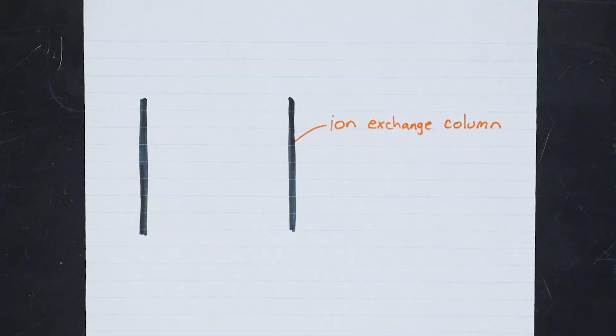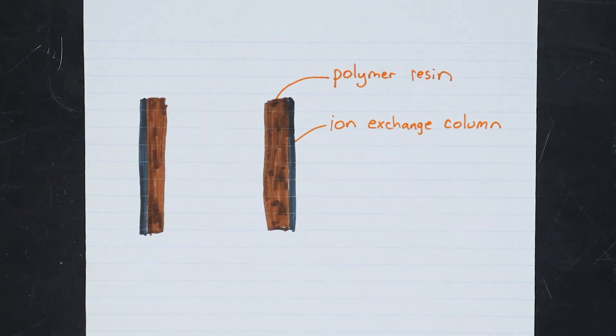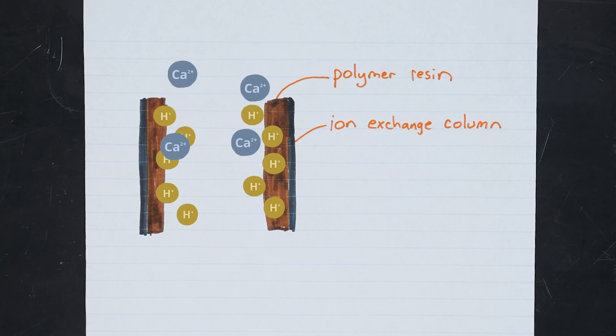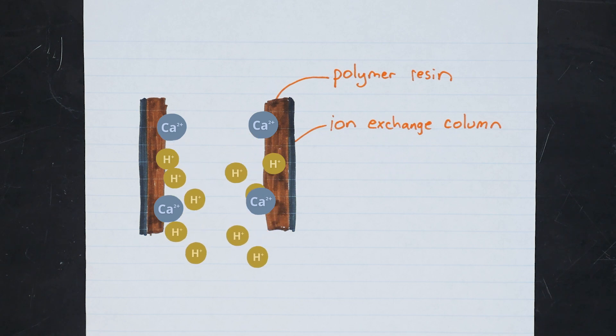Inside this column is a resin that contains an organic polymer containing acidic hydrogens. It turns out that these hydrogens are readily displaced by calcium ions. What that means is that, as calcium ions pass over the resin, they displace the hydrogen atoms and adhere to the polymer. The hydrogen ions are then allowed to flow out of the column.